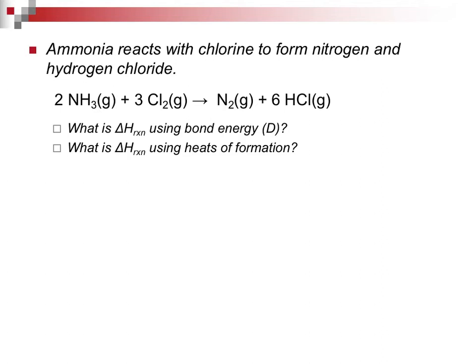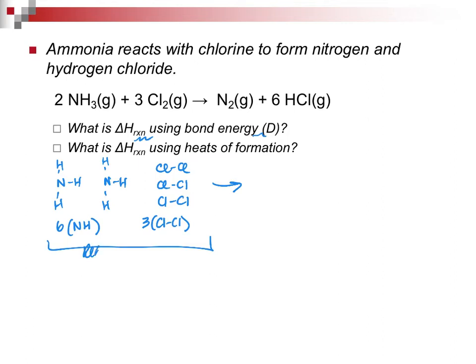What is the delta H of reaction using the bond energies? To do that, you need to draw out each of the materials. You will be learning how to do this in the next chapter, so it's part of what's on the next exam. And what I did is I drew out every single structure that is involved. I have two nitrogens that are giving me six NH bonds, and I have three chlorines, which are giving me three Cl-Cl bonds.